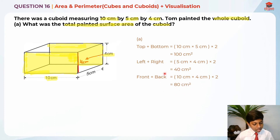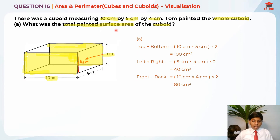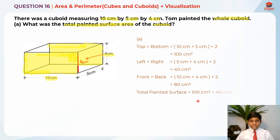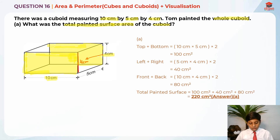To find the total painted surface area, we add 100 cm² plus 40 cm² plus 80 cm², which gives us 220 cm² as the answer for Part A.